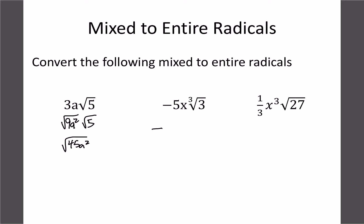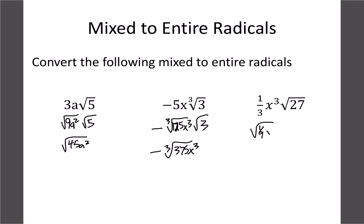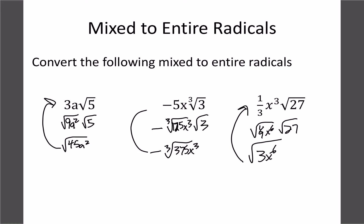Looking at the same examples: for the cube root we'd have ∛(125·5x³·3) giving us -∛(375x³), since 5³=125. The last one had (1/9)x⁶, where 27 times 1/9 is 3. That last one is tough to work backwards from, but the other two we should be able to simplify back to where they started.